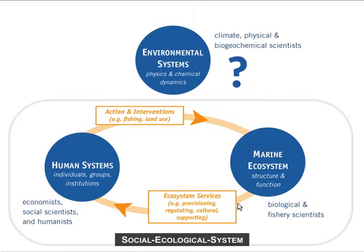We can ask: where is the physical and chemical environmental system in this diagram? Typically, the interaction dynamics between the physical and chemical system and the marine ecosystem are taken into account within the ecological system — represented here as the marine ecosystem. So the ecological system will consider indicators of environmental change such as temperature and hypoxia as given information. However, this information comes without proper interpretation and is often an oversimplification of the environmental, physical, and chemical dynamics.